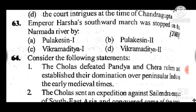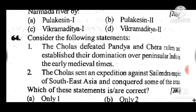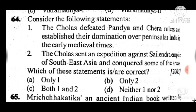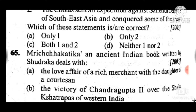Question 63: Harsha's southward march was stopped on the Narmada river by — answer is B, Pulakesi II. Question 64: Consider the following statements — the Cholas defeated Pandyas and Cheras and established their domination over peninsular India in the early medieval period; and the Cholas sent an expedition against the Srivijaya emperor of Southeast Asia and conquered some areas. Answer is C — both statements are correct.